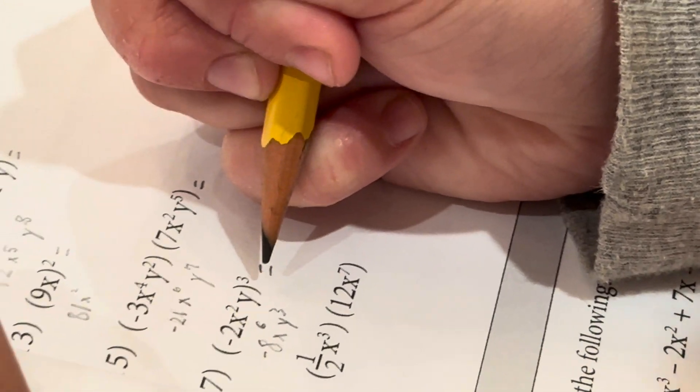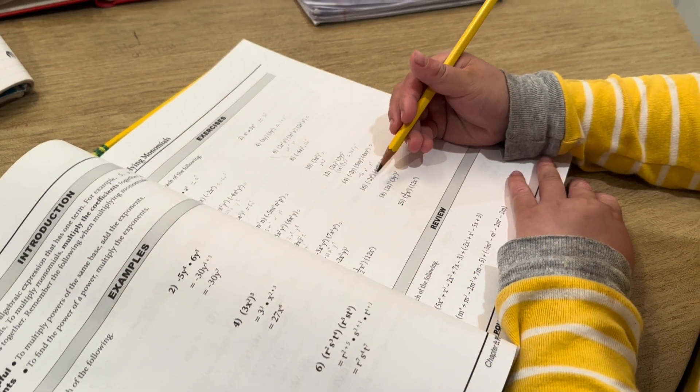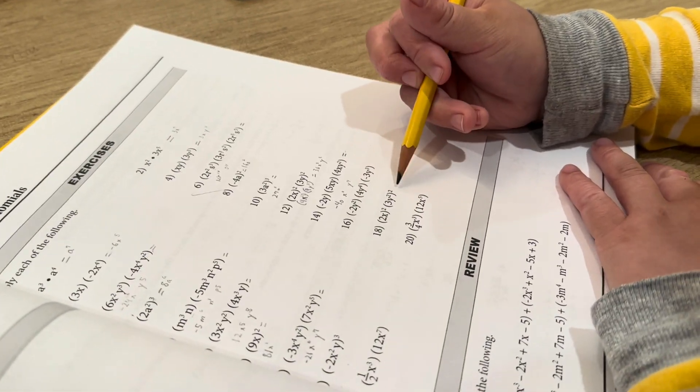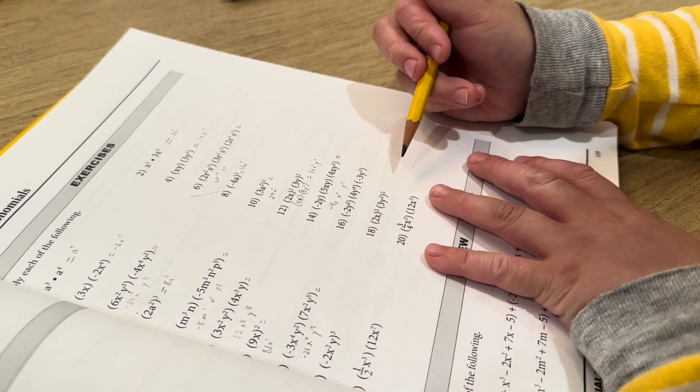I know the piano's going on, but you've got to focus, Daniel-san. Problem 16: negative 2y squared, 4y to the fourth, negative 3y cubed.